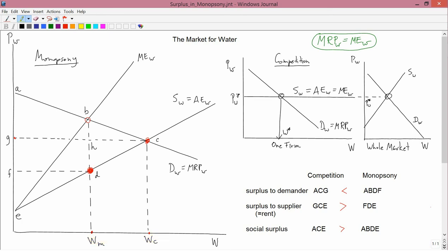In turn, that's what causes the amount of social surplus to shrink from the ACE, the big triangle, to ABDE, which is the smaller region. You can see that there's a deadweight loss. And here's the amount of deadweight loss.